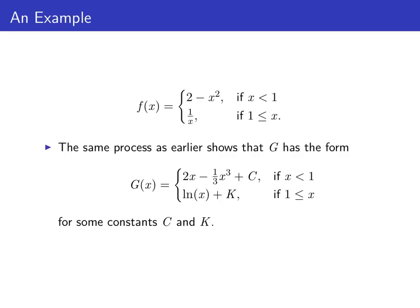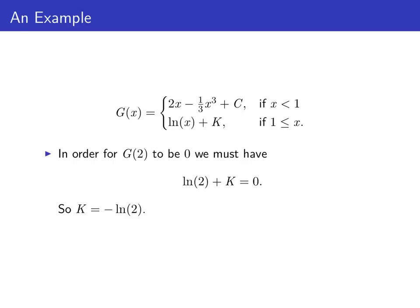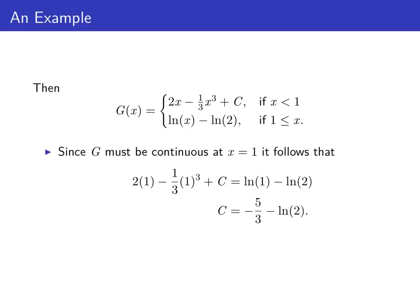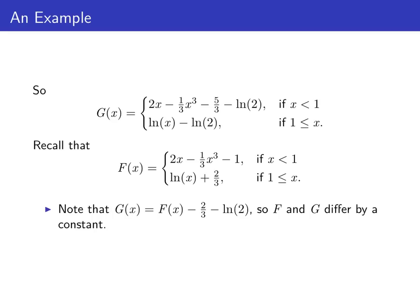The same process shows that big G, as an antiderivative of little f, has the form 2x minus 1 third x cubed plus c if x is less than 1, and the natural log of x plus k if x is bigger than or equal to 1. Since G of 2 equals ln 2 plus k and we want that to be 0, k equals the opposite of the natural log of 2. Using continuity of big G at x equals 1, we set 2 times 1 minus 1 third times 1 cubed plus c equal to ln 1 minus ln 2, and solving gives c equals negative 5 thirds minus the natural log of 2. So big G of x is 2x minus 1 third x cubed minus 5 thirds minus ln 2 if x is less than 1, and ln x minus ln 2 if x is bigger than or equal to 1.